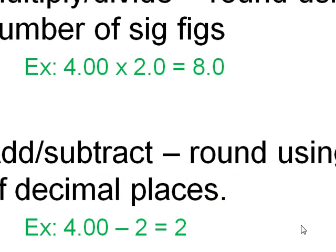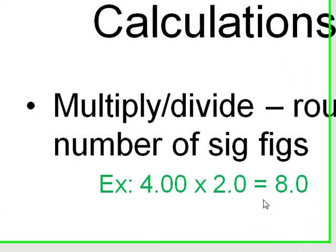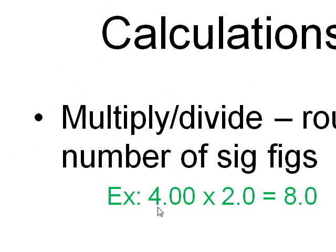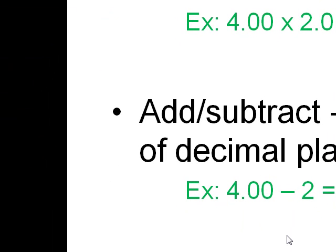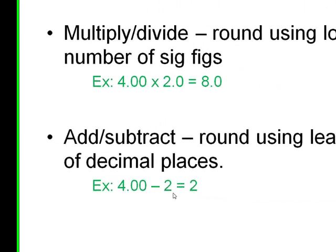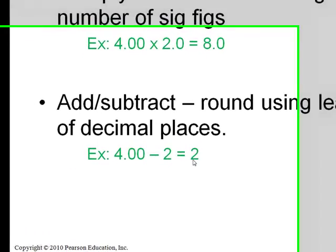When we multiply and divide, the rule is that we count the number of significant figures. So when I multiply 4.00 by 2.0, 4 has three sig figs. 2.0 has two sig figs. So my answer has to have two sig figs. When I add and subtract, I'm going to round to the least number of decimal places. So 4.00 minus 2, 2 has no decimal places, so I'm going to just round this number to 2.